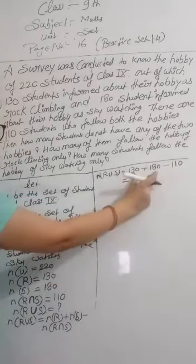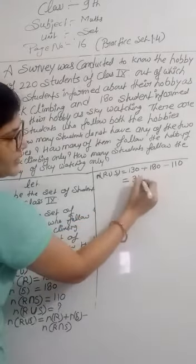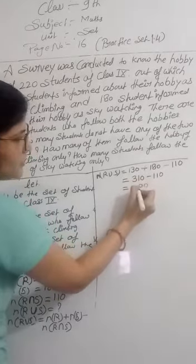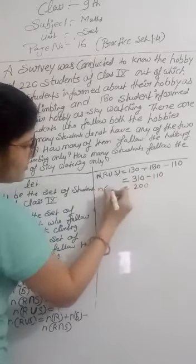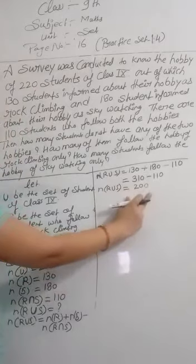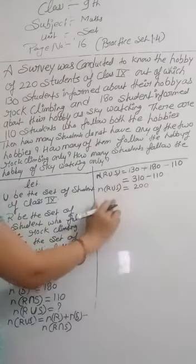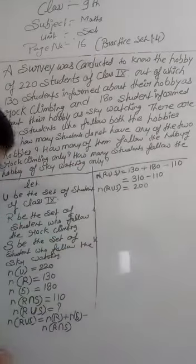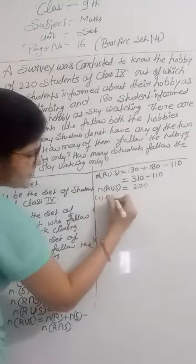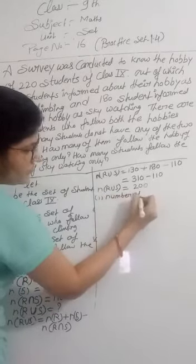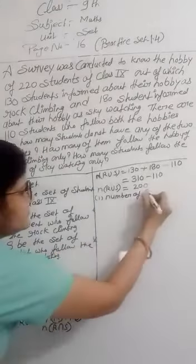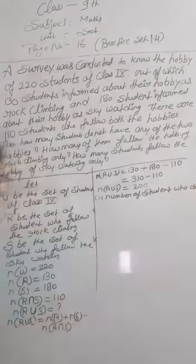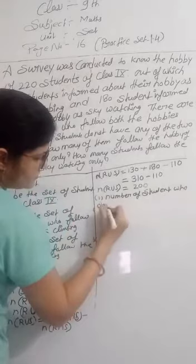First we add these two numbers: 130 plus 180 gives us 310, minus 110 gives us number of R union S equal to 200.